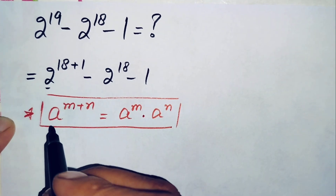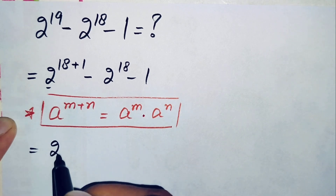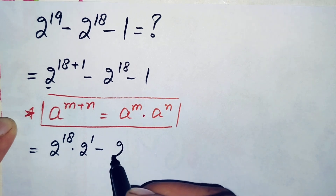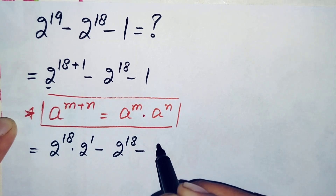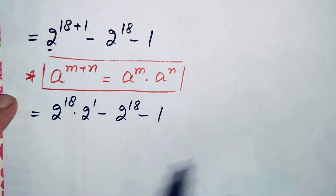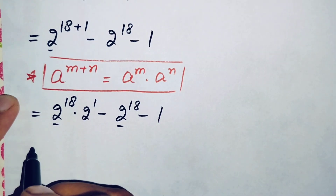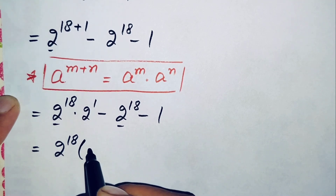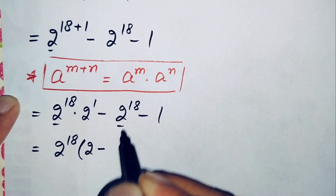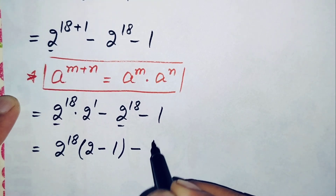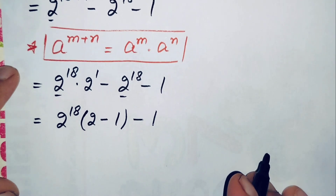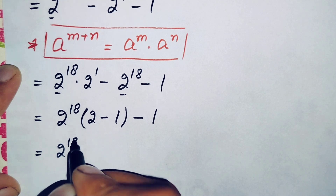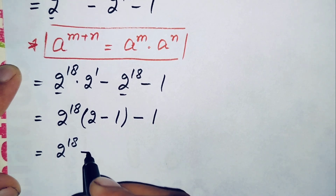Using this exponential property in the first term, this equation becomes 2 raised to power 18 times 2 raised to power 1, minus 2 raised to power 18, minus 1. Now we take 2 raised to power 18 common from the first two terms, leaving 2 raised to power 1 minus 1, which is 2 minus 1 equals 1. So this becomes 2 raised to power 18 times 1, which is 2 raised to power 18 minus 1.